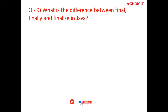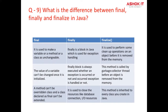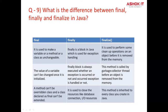Question number nine: What is the difference between final, finally, and finalize in Java? This is a most important question that is frequently asked. Final is used to make a variable, method, or class unchangeable. If used with a variable, that variable becomes a constant. If used with a method, that method cannot be overridden. If used with a class, the class cannot be extended. Finally is a block in Java which is used for exception handling — this block is always executed whether an exception is handled or not. Finalize is used to perform some cleanup operations on an object before it is removed from memory, such as closing connections, files, IO connections, and database connections.